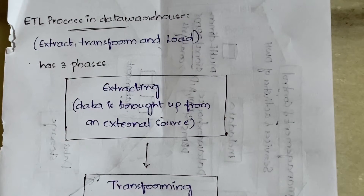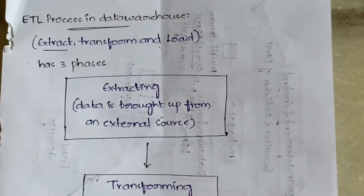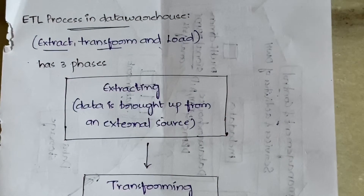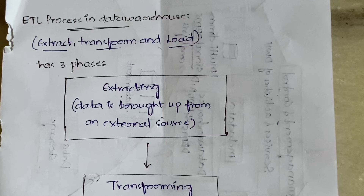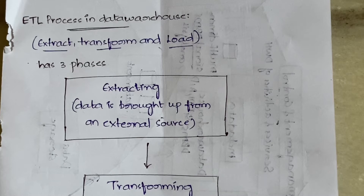What happens in ETL is: it collects the data from various sources, which is the Extract step. The data is collected from various sources, then Transform — the data is transformed into a specified format — and then Load, where the data is loaded into a large database. This happens in three phases. This is the overview of ETL.